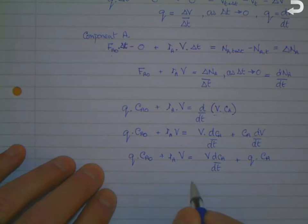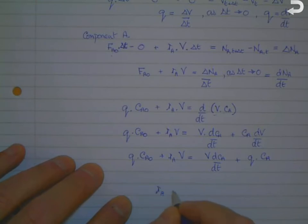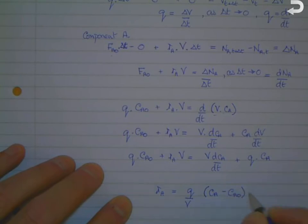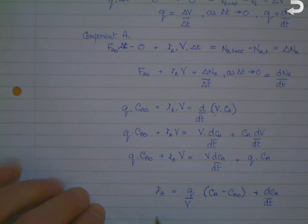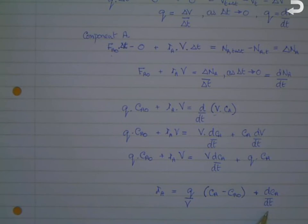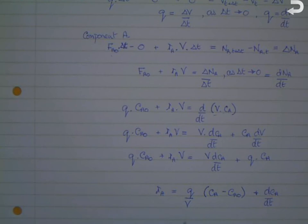Dividing throughout by V and rearranging, we get: ra equals (Q/V)·(Ca minus Ca_naught) plus dCa/dt. You can see that if Q equals zero this term disappears and you recover the expression for a true batch reactor. You can also see that the first term looks quite similar to the expression for a CSTR, where the dCa/dt term is absent. So this expression is a combination of a CSTR and a batch reactor, and that is the equation used to describe a fed batch process.